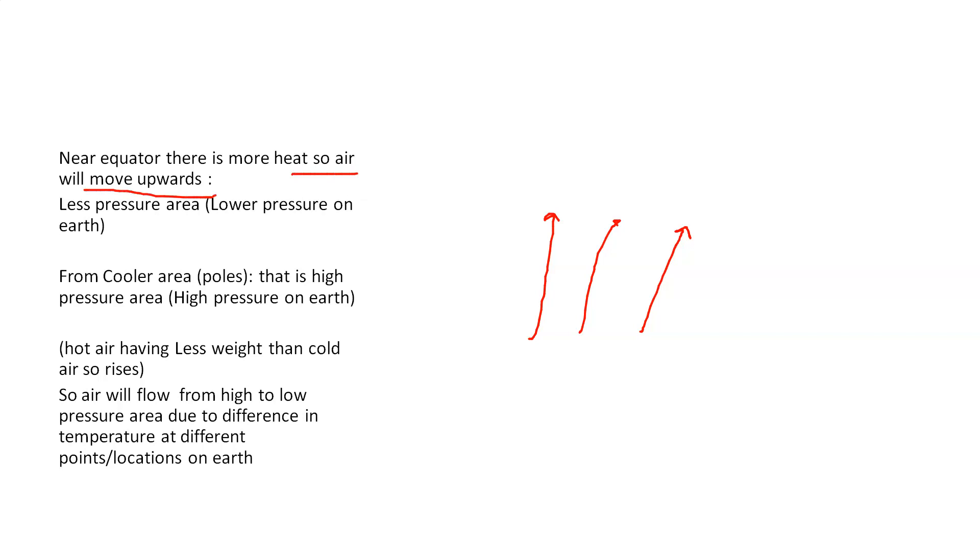The gases expand and the air will move upwards, so it will create a low pressure area on the earth. From cooler area that is high pressure area on the earth, the air will move towards the low pressure area. So air will flow from high to low pressure area due to difference in temperature at different points and locations on the earth.